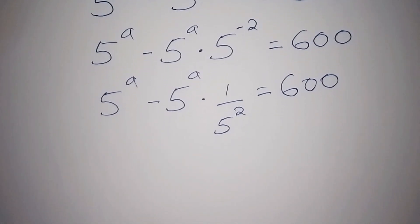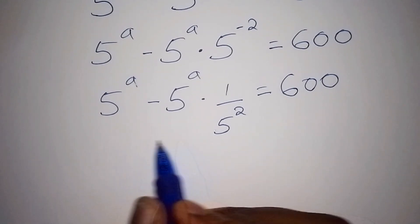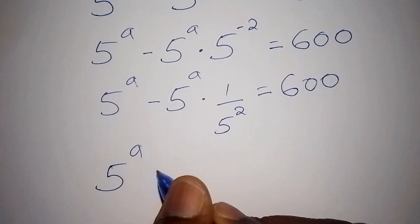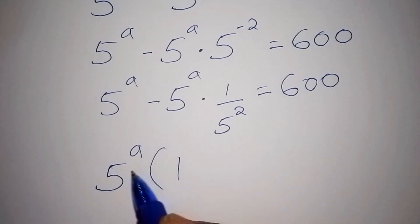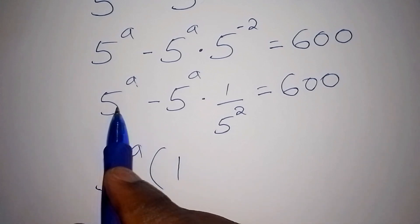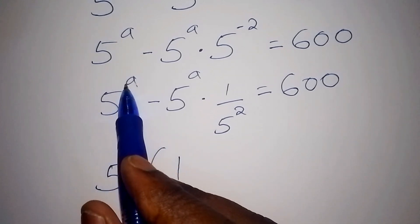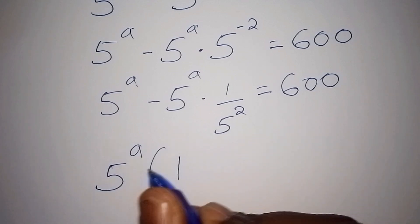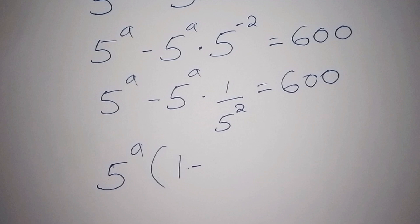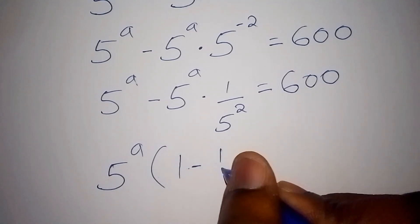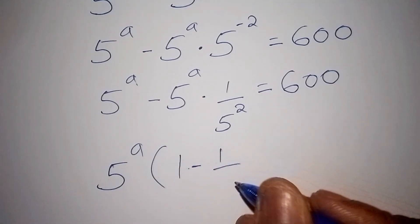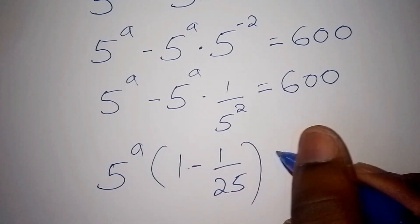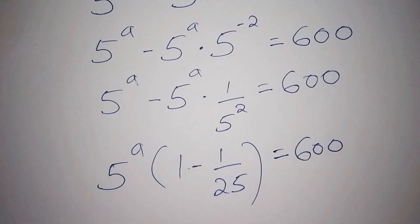The next thing we need to do is factorize this problem. We can write this as 5 to the power of a, into bracket: 1 — so 5^a multiplied by 1 gives 5^a — then minus 1 over 25, since 5 to the power of 2 is 25, equals 600.